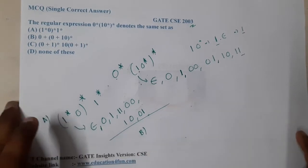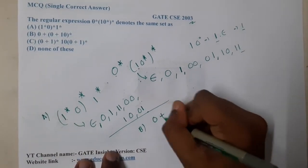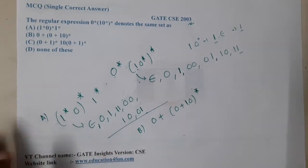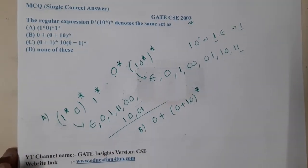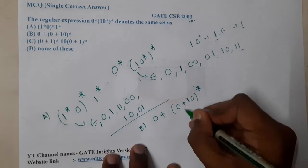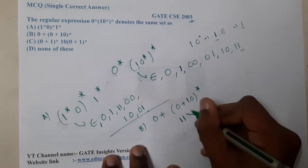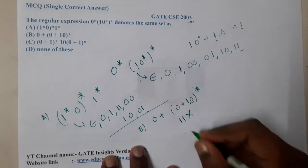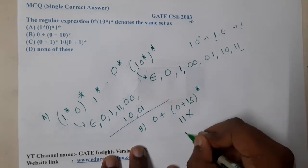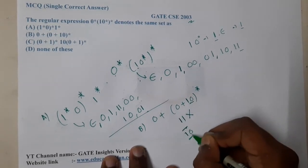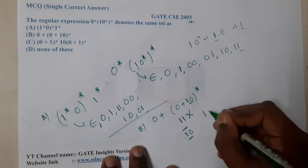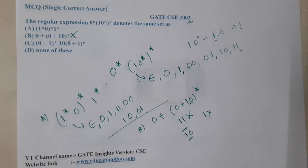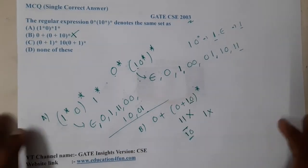Option B is (0+(01)0)*. Here there is an issue — can I generate double one? No, because here one is fixed with zero. If you generate one, you get zero mandatorily. So we cannot generate one-one, and in fact we cannot generate even a single one. So option B is compulsorily wrong.